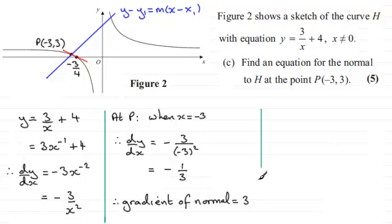Okay, so, that's given us the gradient of the normal. So, I can now go on to find the equation of the normal. So, we'll just write a little intro here. That is the equation of the normal at P is,